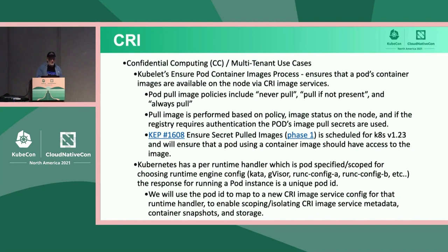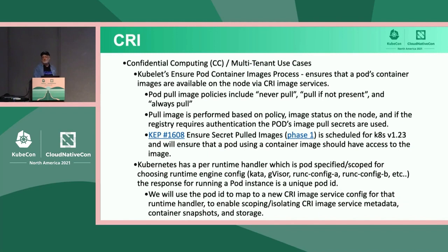The other thing we've been running into a lot with confidential computing is we need the ability to decide where we want to store the container image cache information, the metadata information, the snapshotted images, and whatever data you're storing in your container. What the Kata containers folks want to do is put that information inside the virtual machine — it'll be expensive, but it'll be very secure. So instead of pulling images and caching them on your host, if you say you want a runtime handler to be secure with Kata containers, that runtime handler switch would go to a configuration pointing to pull the image into the virtual machine.